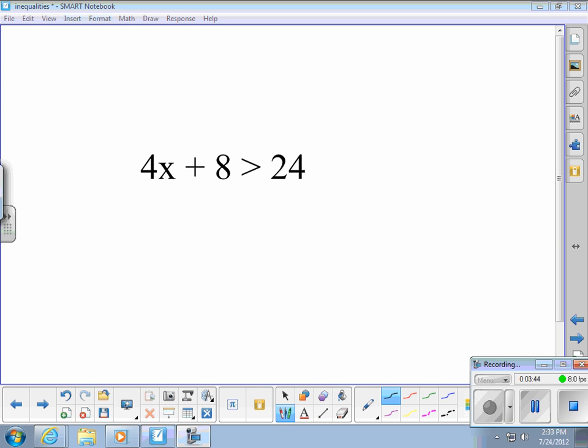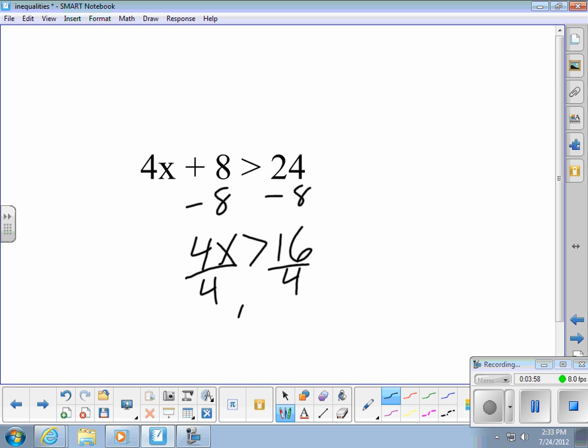One more example. Let's subtract 8 from each side. 24 minus 8 is 16. So, 4x is greater than 16. Divide by 4. x is greater than 4. Any number greater than 4 should satisfy that first equation.